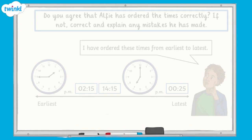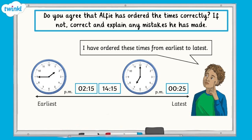Now let's have a go at a question. Alfie has ordered different times from earliest to latest. Do you agree with how Alfie has ordered them? If not, correct and explain any mistakes that he has made.